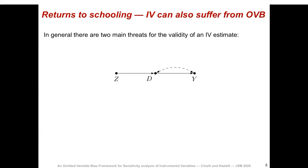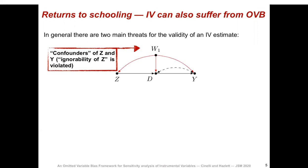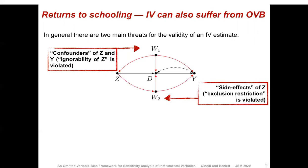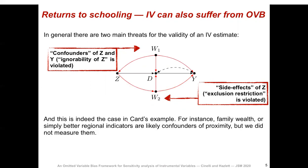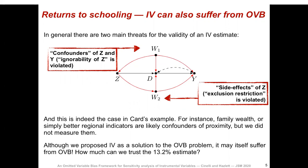In general, there are two main threats to the validity of an IV estimate. The first is that the instrument may not be as good as random — there could be confounders like W1 in this graph that affect both the instrument and the outcome. Even if the instrument is random, there is another threat: the instrument may affect the outcome other than through its effect on the treatment, such as through W2 in this graph. Family wealth or simply better region indicators are likely confounders of proximity, but we did not measure them. So although we proposed IV as a solution to the OVB problem, our IV estimate itself may suffer from OVB. How much can we really trust this 13.2% estimate?